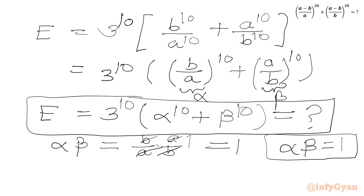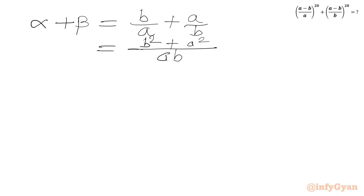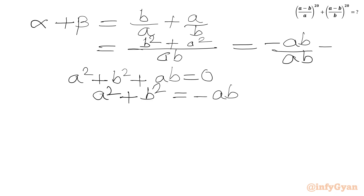Now we will calculate α + β. So α + β = b/a + a/b. Taking LCM, the denominator is ab and the numerator is b² + a². Our known equation was a² + b² + ab = 0, so a² + b² = -ab. Substituting in the numerator: -ab / ab = -1. So α + β = -1.